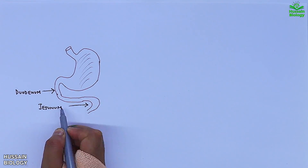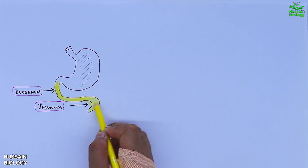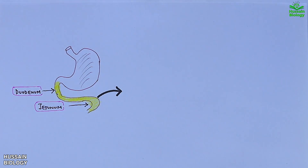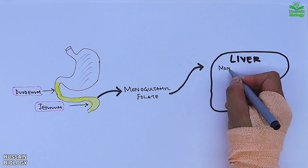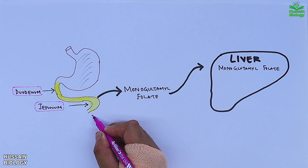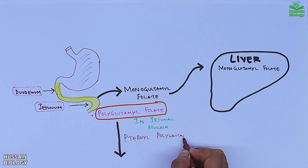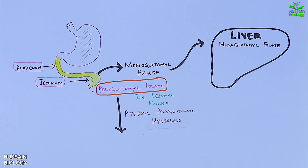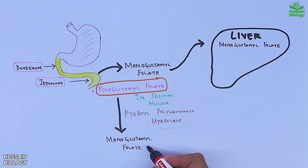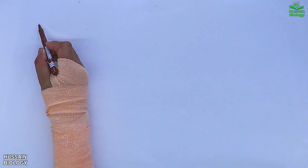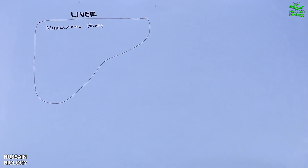In this diagram we have the stomach followed by the duodenum and jejunum, parts of the small intestine. From the duodenum and jejunum we get the monoglutamate folate, which is directly absorbed and gets into the liver. We also get the polyglutamate folate, which is not directly absorbed and needs conversion first. In the jejunal mucosa, it is acted upon by pteroyl polyglutamate hydrolase and converted into monoglutamate folate, which then also gets into the liver.